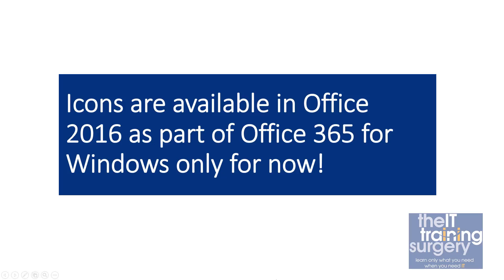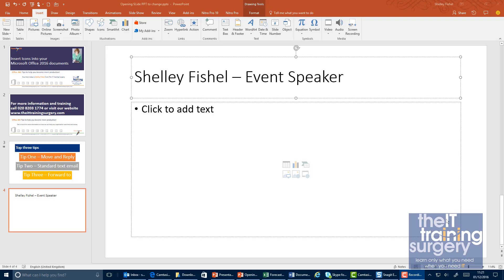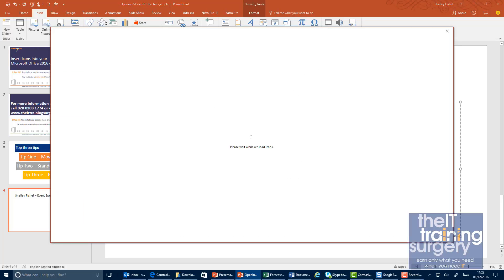I'm going to demonstrate this using PowerPoint, but you can do exactly the same things in Word and Excel. I've got a slide here talking about Shelley Fisher as an event speaker and I'd like some icons or little images to illustrate what that means. Up here on my Insert ribbon, in the Illustration group, I've had a new icon added — it's called Icons. When I click on Icons, it brings up a palette from where I can choose the icons I want.